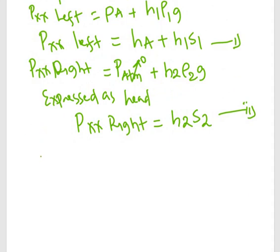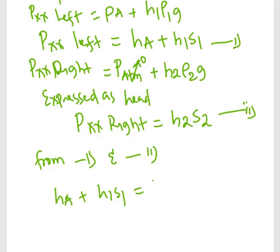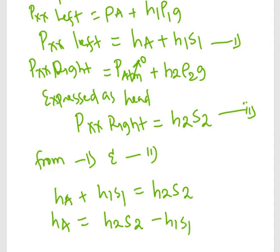Having taken the assumption that pressure at two points which are at the same level in a homogeneous fluid are equal, from Equation 1 and Equation 2: h_A + h1·s1 = h2·s2. Since we need the pressure at point A, making h_A the subject of the formula gives: h_A = h2·s2 − h1·s1.